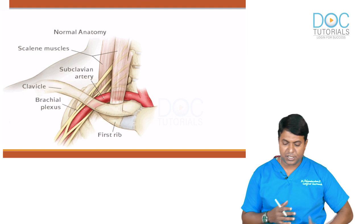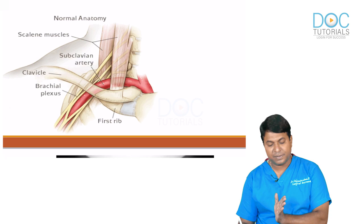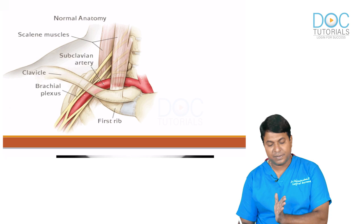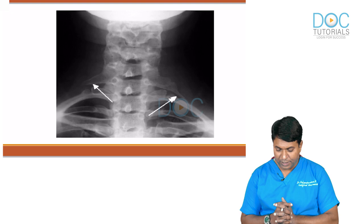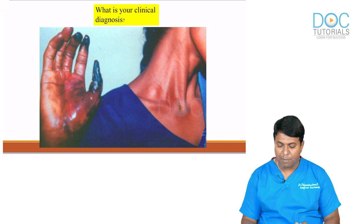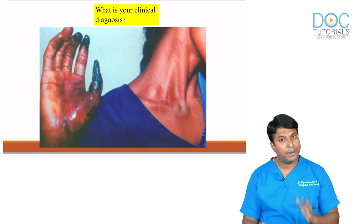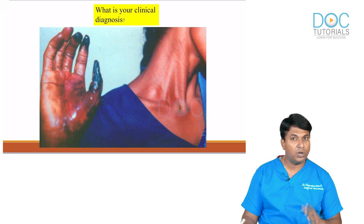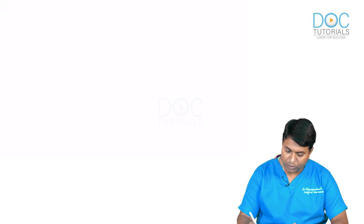The images show the scalene triangle anatomy with scalenus anterior anteriorly and scalenus medius posteriorly, with the subclavian artery exiting. The X-ray shows bilateral incomplete cervical ribs, and the clinical picture shows a patient with a bony swelling above the clavicle, with gangrene of the fingers and ischemic ulcers — a classical case of vascular TOS due to cervical rib.